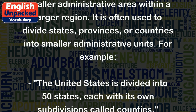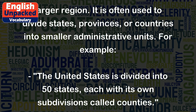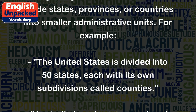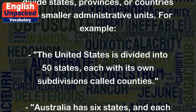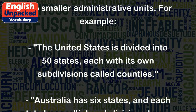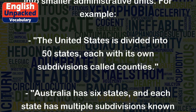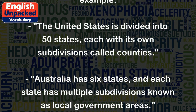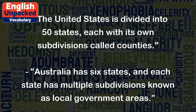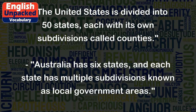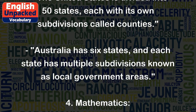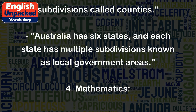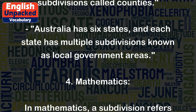For example, the United States is divided into 50 states, each with its own subdivisions called counties. Australia has six states, and each state has multiple subdivisions known as local government areas.